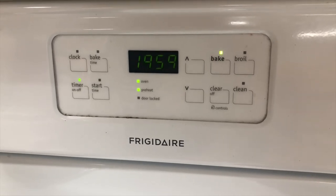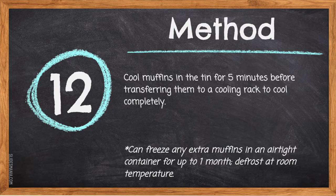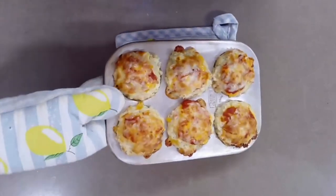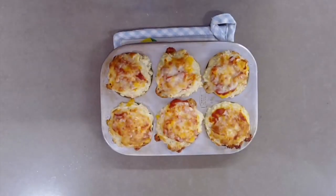Step twelve: cool muffins in the tin for five minutes before transferring them to a cooling rack to cool completely. Any extra muffins can be frozen in an airtight container for up to one month and defrosted at room temperature. Place a hot mat down to protect the countertop from the hot muffin tin, then do the doneness test to make sure the muffins are fully cooked. If not, pop them back in for an extra five minutes.